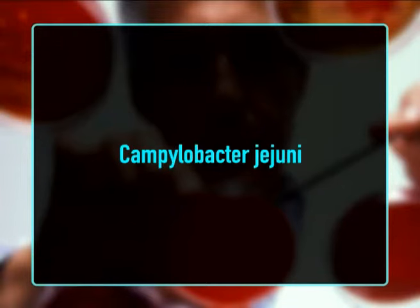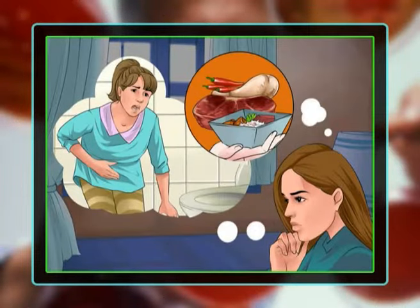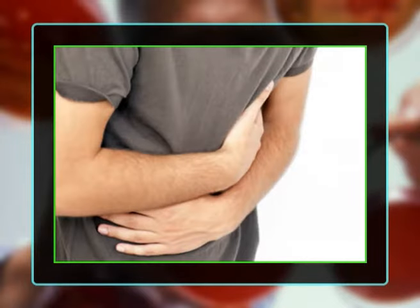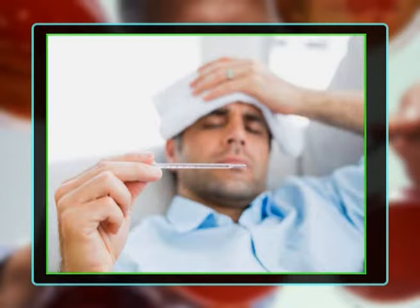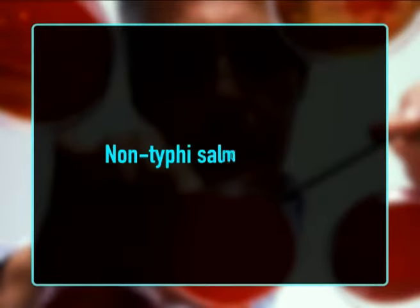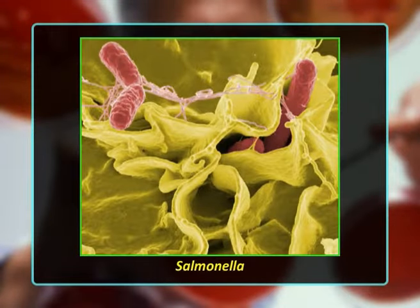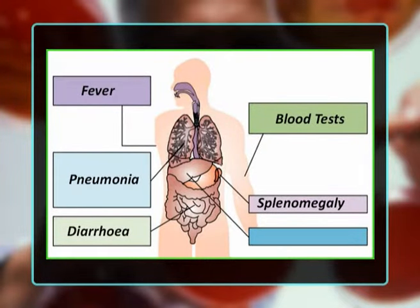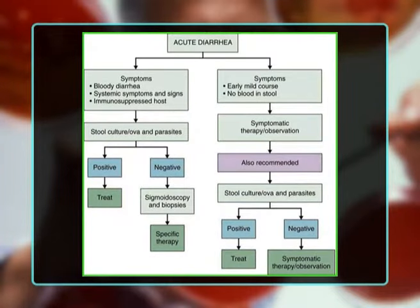Campylobacter jejuni is a common cause of diarrhea in humans and some animal species. Transmission can be by direct contact between humans and infected animals or their feces, or more commonly by consumption of contaminated food or water. Symptoms range from mild diarrhea to severe invasive disease, including abdominal pain, fever, and blood/mucus in stools. Non-typhi Salmonellosis: there are more than 2,000 serotypes of Salmonella, of which only a few cause gastroenteritis in humans.